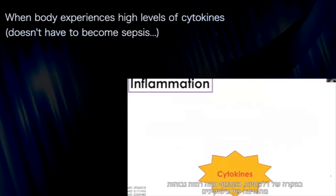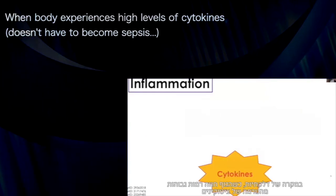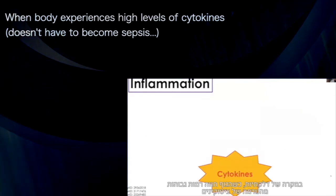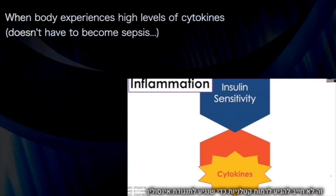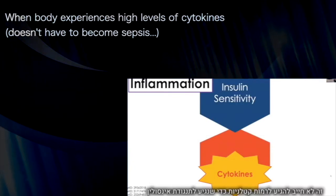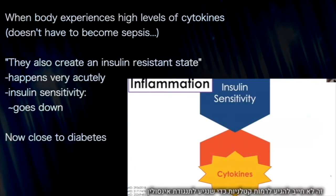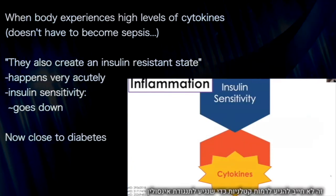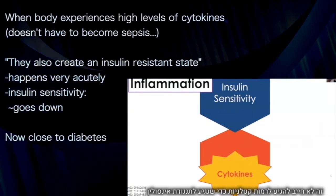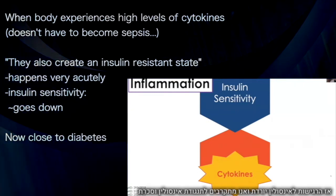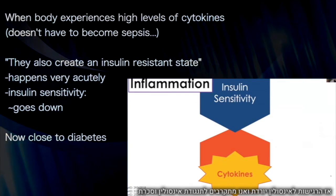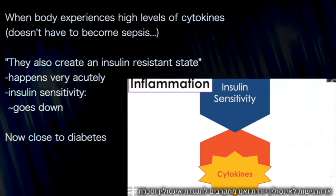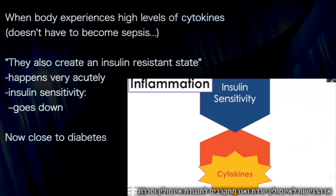In the case of inflammation, when the body experiences higher than normal levels of cytokines — it doesn't have to reach a level of sepsis — they also create an insulin-resistant state. This is something that happens very acutely, and so insulin sensitivity starts to go down, moving ever closer towards full-on insulin resistance and diabetes.